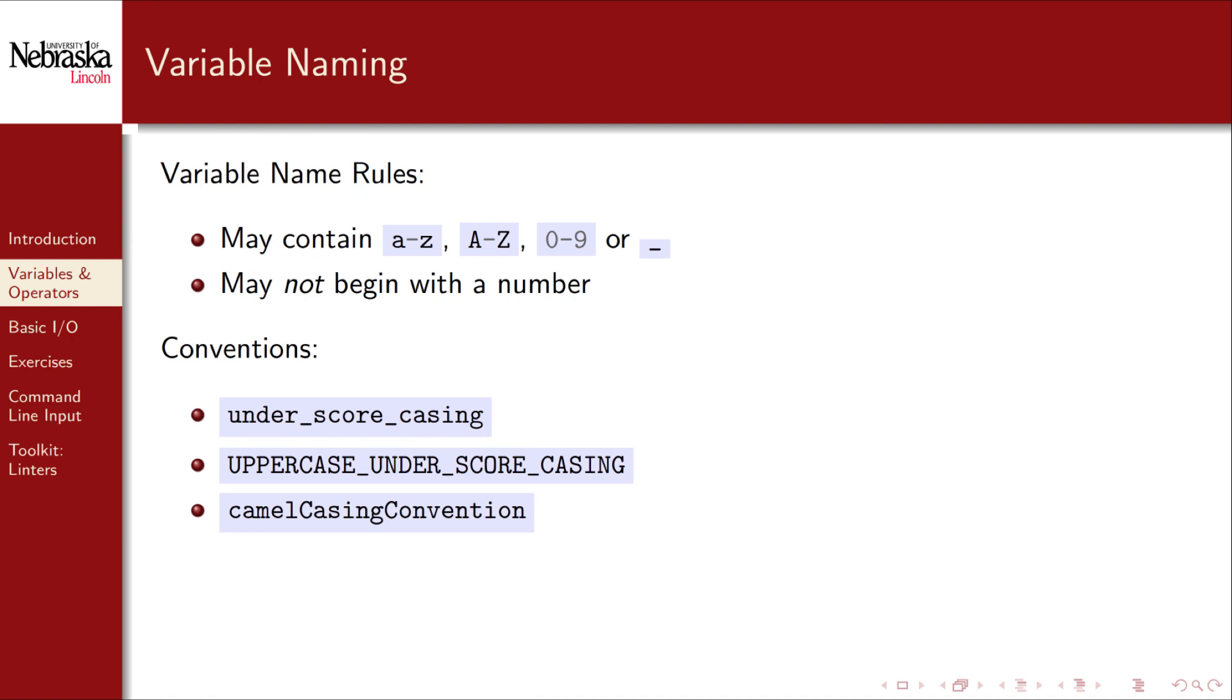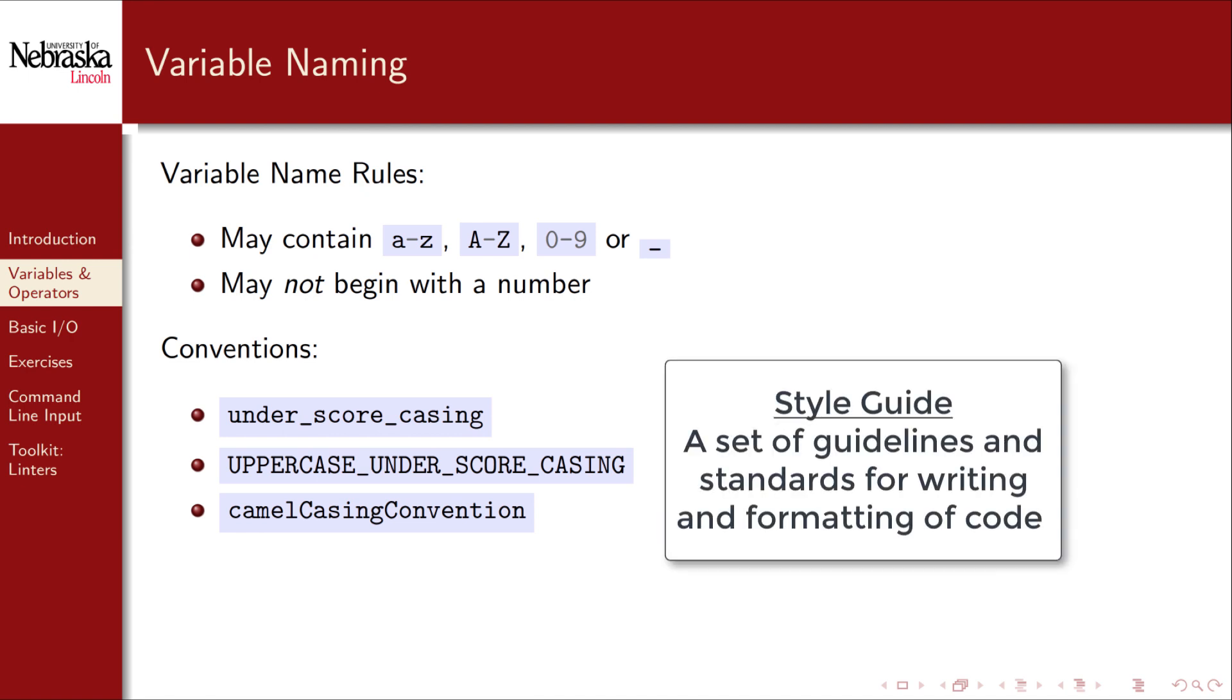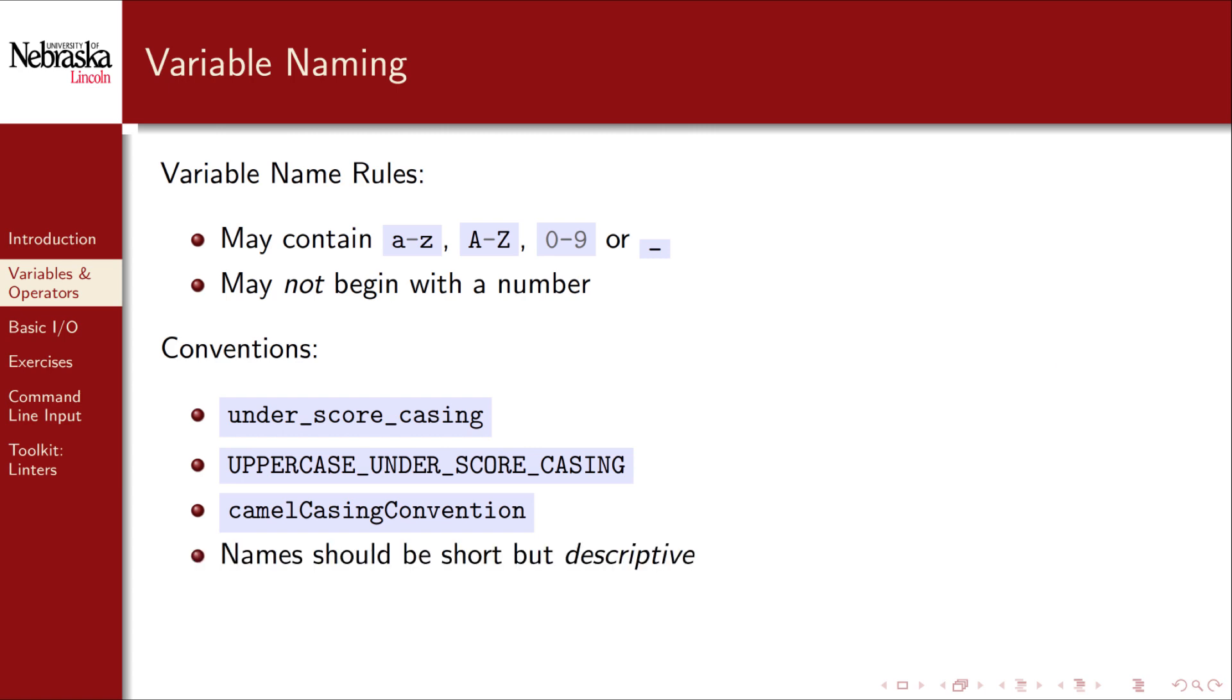Whatever you end up choosing to use, consistency is the most important thing. In practice, when writing actual real-world code, you would want to adhere to some established style guide. In addition, variable names should be short but descriptive. The name should reflect whatever the value of the variable is representing. Good examples would include the following: initial value, longitude, latitude, interest rate. Bad examples of variable names would include the following, which are too generic to have any relation to the value stored in the variable.